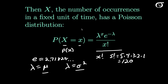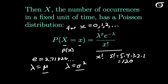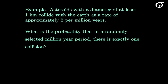For a Poisson distribution, the mean and the variance are equal. One thing to note is for what values does this actually work? This is only true for x equal to 0, 1, 2, all the way off to infinity. So there is no upper bound. We're counting the number of times something happens, so we have a minimum of 0, and then 1, 2, 3, with no upper bound going off to infinity.